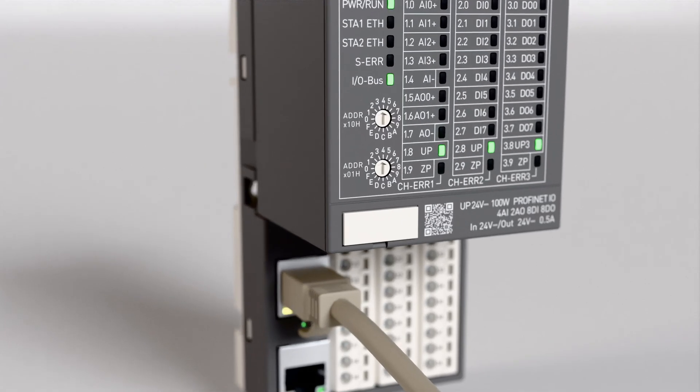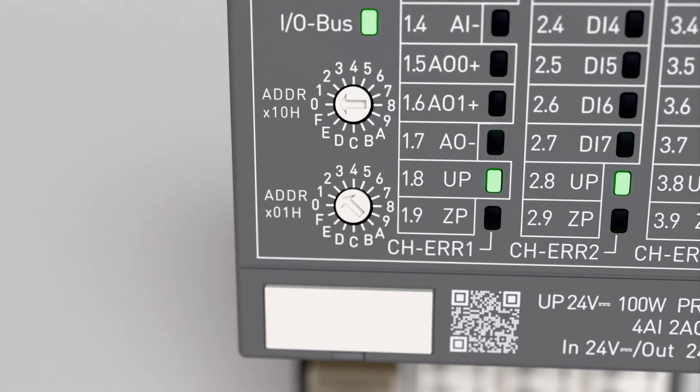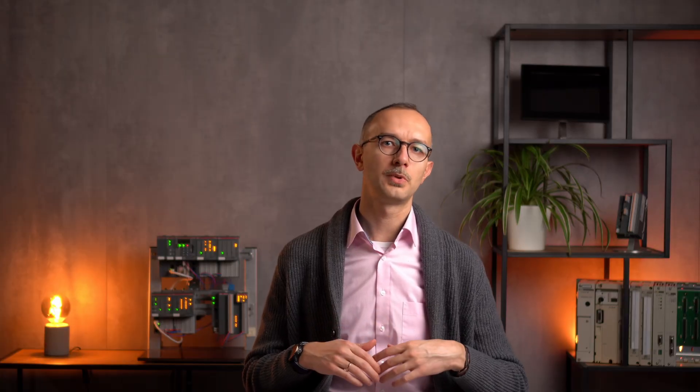Well, in case of CI501 module, there are two ways. First one: device name has two parts, fixed and variable. Fixed part is CI501-PN- and the variable part comes from these two little rotary switches on the front panel of the module. If upper switch is set to 0 and lower switch is set to 1, then station name would be CI501-PN-01. We will talk a bit later about the second way to set a device name.